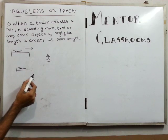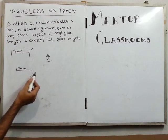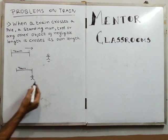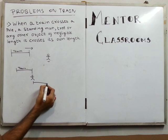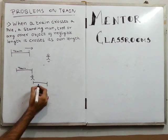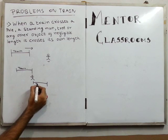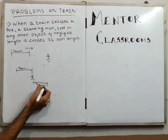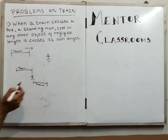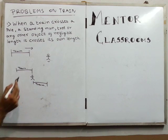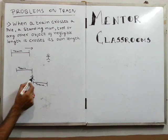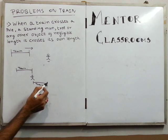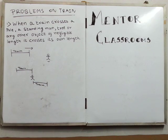The train starts crossing the man, and at this point the train finally crosses the man. From this pictorial representation it is clear that when a train passes this man, the train crosses its own length. Remember this.